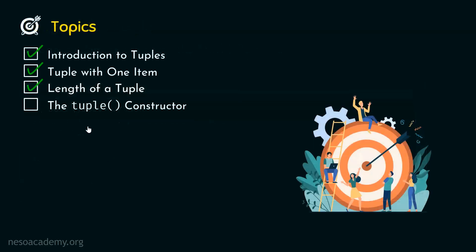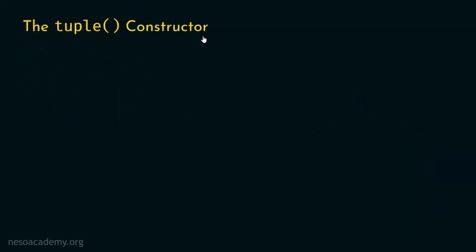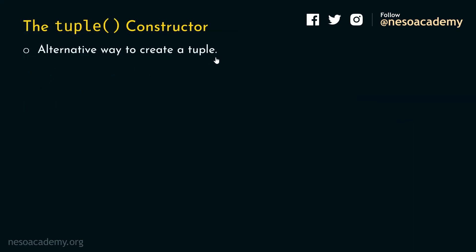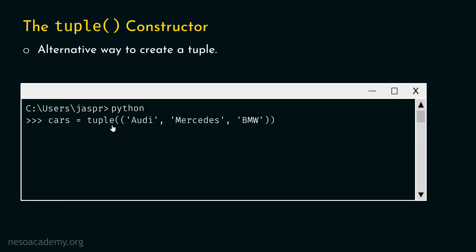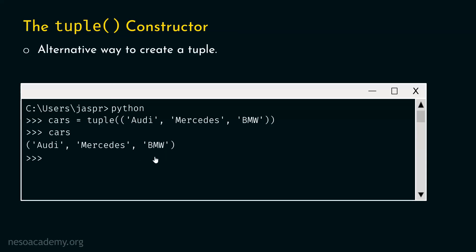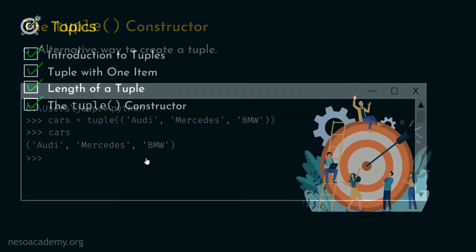Let's move on to the next topic: the tuple constructor. The tuple constructor provides an alternative way to create a tuple. Let's create the same cars tuple using it. Type: cars equal to tuple, and within parentheses we need another pair of parentheses, inside which we specify the three items we want. Remember, we need two pairs of parentheses. Hitting enter and typing cars, we get the same tuple with three items: Audi, Mercedes, and BMW. So the tuple constructor provides an alternative way to create a tuple. We are now done with all the topics of this presentation.